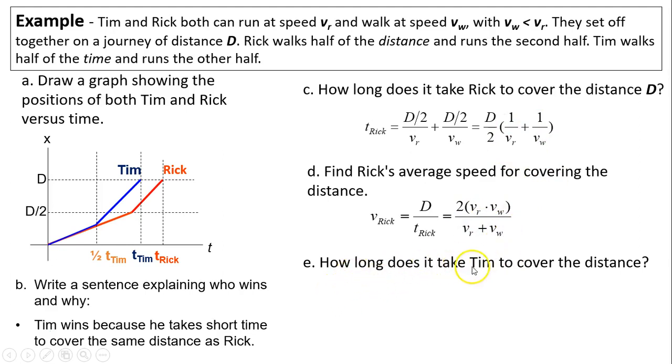Last one. How long does it take Tim to cover the distance? What's the time? So to cover the whole distance, d, total distance, is the running speed times the total time divided by 2. Because Tim uses half the time to run and half time to walk. You're factoring t Tim. Then you solve for t Tim. You should have this answer.